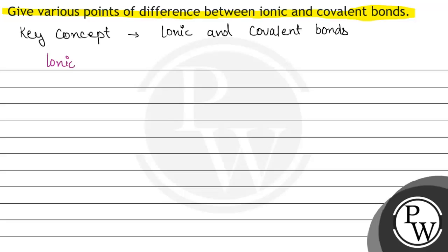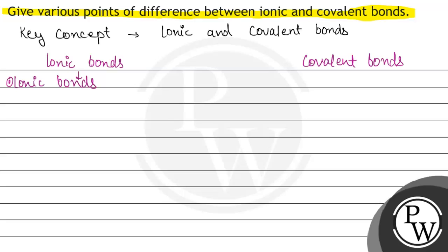Let us see what ionic and covalent bonds are. Ionic bonds are formed by the transfer of electrons, and covalent bonds are formed by the sharing of electrons. Let us write: ionic bonds are formed by transfer of electrons.